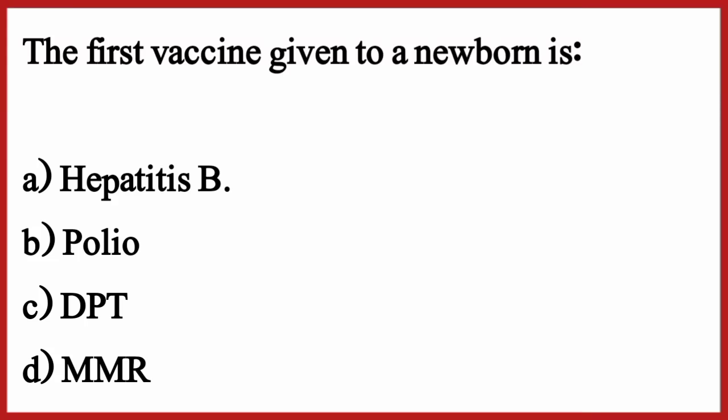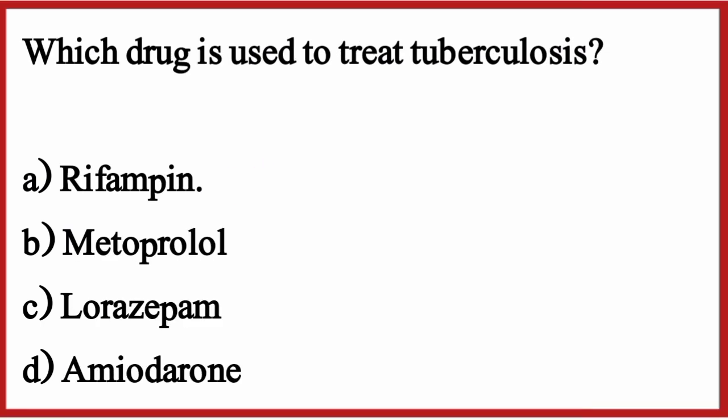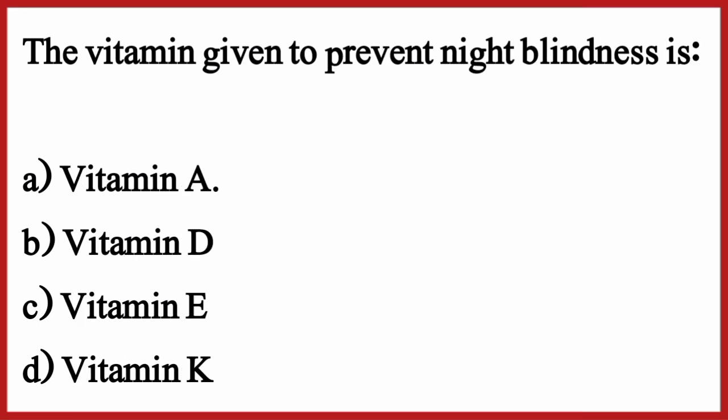The first vaccine given to a newborn is — the correct option is option A: Hepatitis B. Which drug is used to treat tuberculosis? The correct option is option A: Rifampicin. The vitamin given to prevent night blindness is — the correct option is option A: Vitamin A.